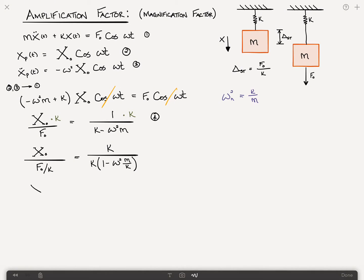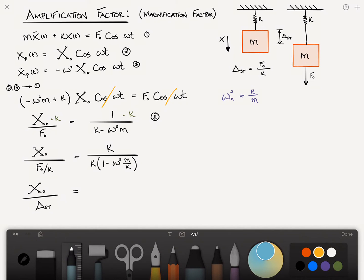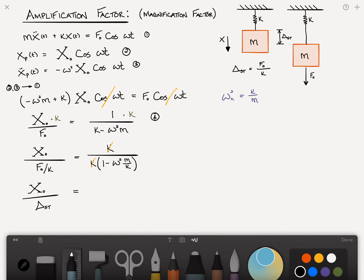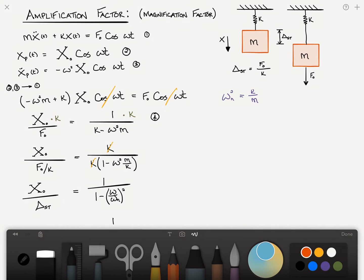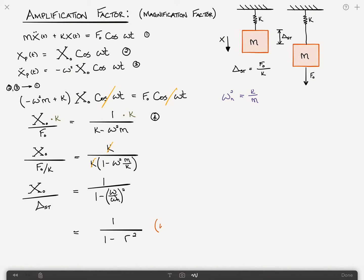We'll rewrite this as x sub zero divided by delta static is equal to, the k's cancel, and what I'm left with is 1 divided by 1 minus omega divided by omega n quantity squared. Which I can also write as 1 divided by 1 minus r squared, where r equals omega divided by omega n.